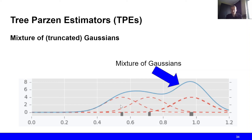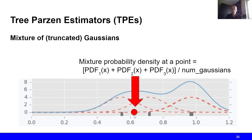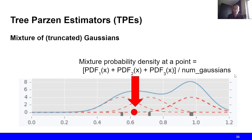To compute the probability density at a given point under the mixture distribution, we say this point could be sampled from the first Gaussian — so we compute the probability under that distribution — but it could also come from the second distribution, so we add that probability, and it could also come from the third, so we add that term as well. Finally, we normalize by the number of Gaussians so that it remains a valid probability distribution. This is how we compute the probability density at a given point using a mixture of Gaussians.